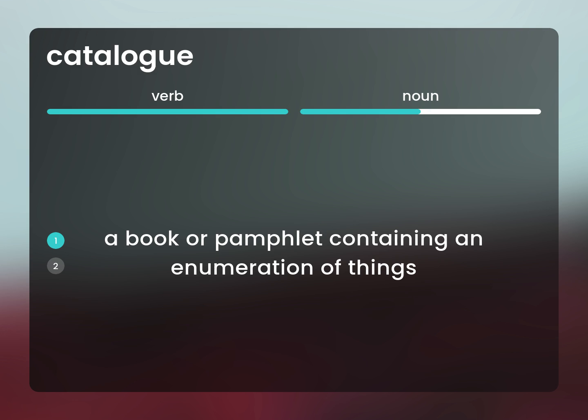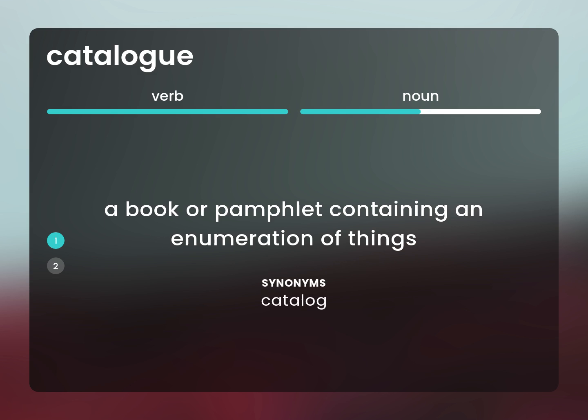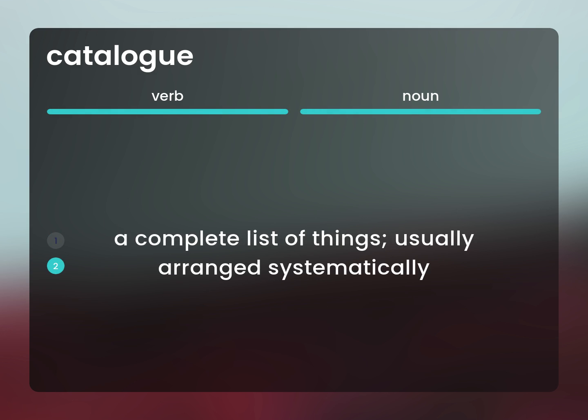Catalog. A book or pamphlet containing an enumeration of things. A complete list of things, usually arranged systematically.